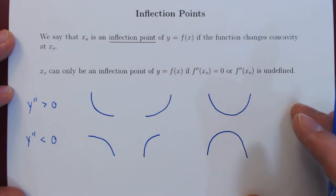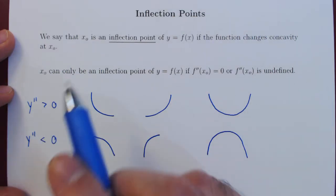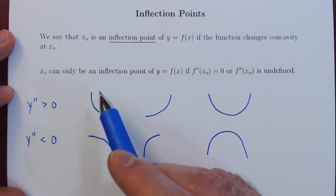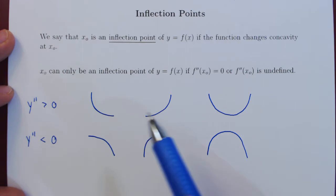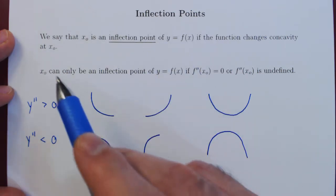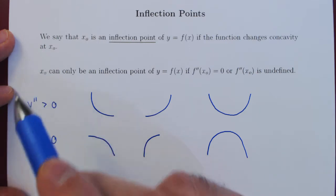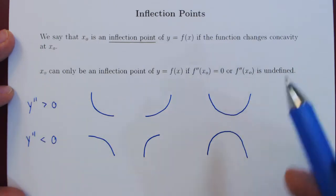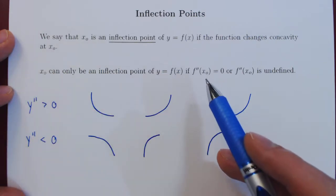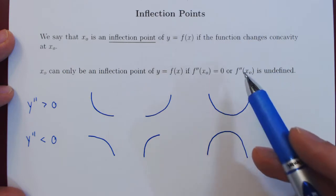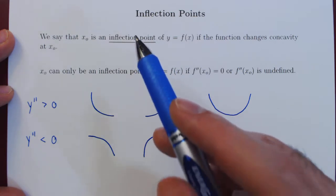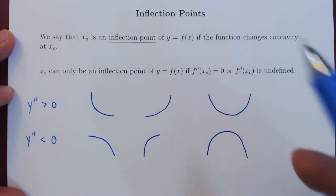Now the last comment I want to make is we have to be careful. A function can only change from concave up to concave down, or concave down to concave up, if we go through an inflection point of the function — therefore a value of x at which the second derivative is 0 or is undefined. But a value of x at which the second derivative is 0 or undefined does not guarantee an inflection point, because an inflection point is a point at which the concavity of the function does change.